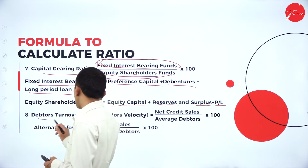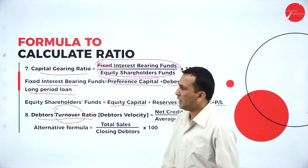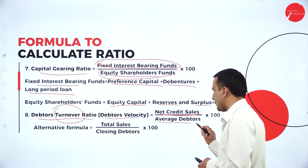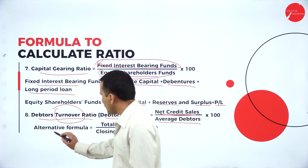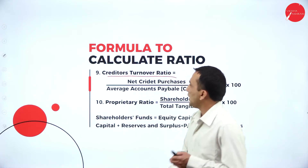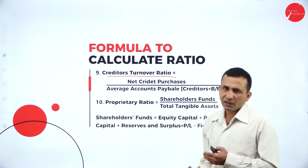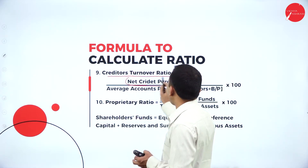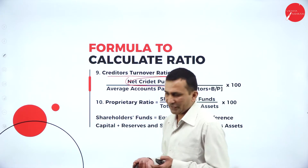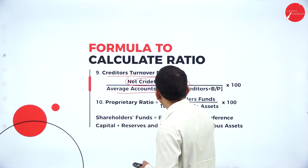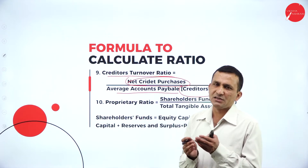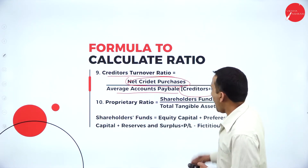Moving to debtors turnover ratio — turnover means sales. It is net credit sales divided by average debtors. The alternative formula is total sales divided by closing debtors. Next is creditors turnover ratio: because of purchasing raw material on credit, we need to find the creditors turnover ratio, which is net credit purchases divided by average accounts payable — creditors plus bills payable.